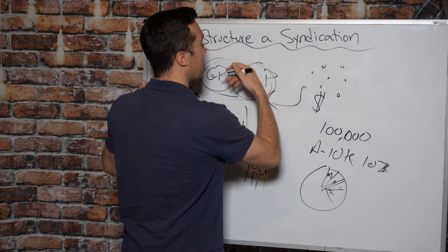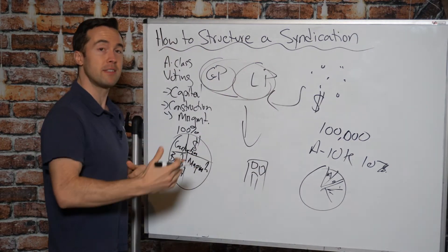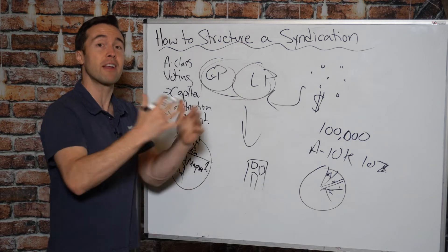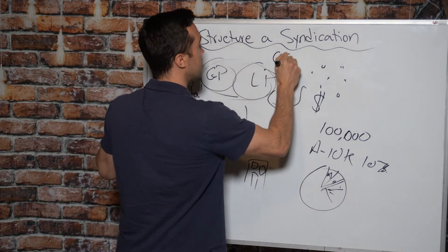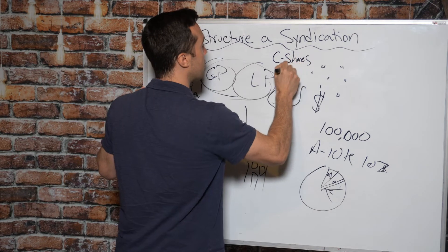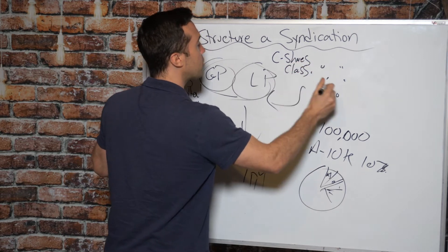The limited partnership is assigned shares. This could be B shares, C shares, depending on how you want to structure it. Let's call them C shares or C class shares. And these are non-voting.